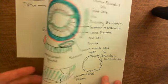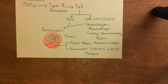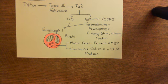These eosinophils also release cysteinyl leukotrienes and latent transforming growth factor beta-1, which will be discussed in the next video.